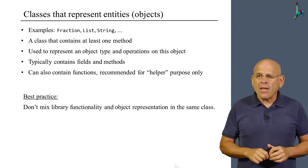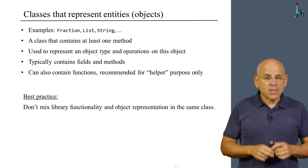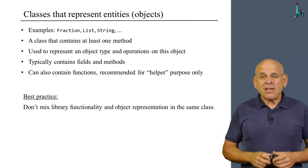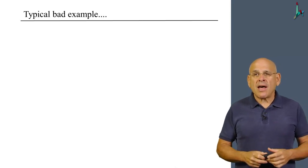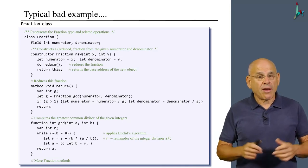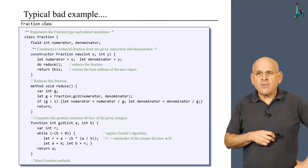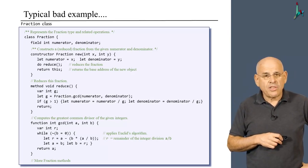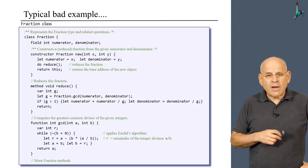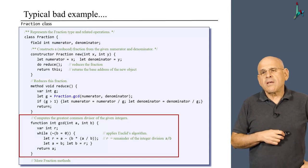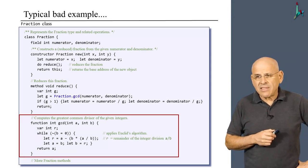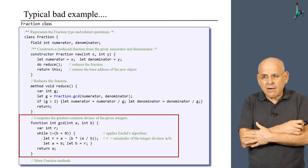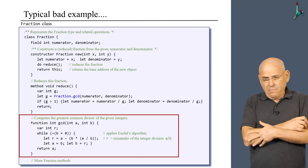And in order to illustrate this principle, I will show you an example that actually violates it. And this example is the fraction class that we saw earlier in the course. If you look at this class, you will see in this slide here, we have a constructor, a method called reduce, and a function called GCD. And the method does what I just described. It computes the great common divisor of two numbers, which happen to be the numerator and the denominator, and then it uses the result for some purpose.